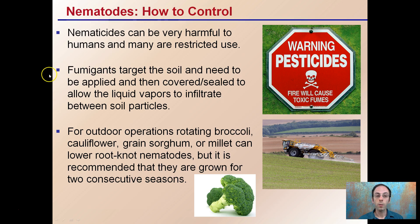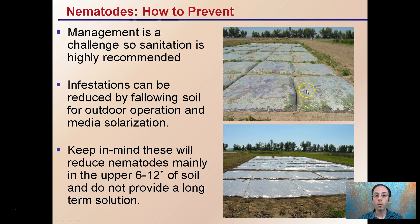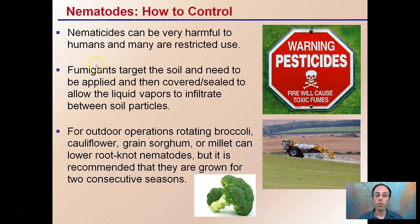Fumigants target the soil and need to be applied and are then covered and sealed to allow vapors to infiltrate the soil particles — pretty harsh conditions. Going back to the previous slide, solarization is simply covering the soil and causing the heat of the sun to surface-sterilize and solarize the soil. Here we're covering the soil but also adding a fumigant pesticide. For outdoor operations, rotating broccoli, cauliflower, green sorghum, or millet can lower root knot nematodes if that's your particular issue.